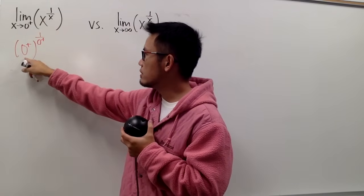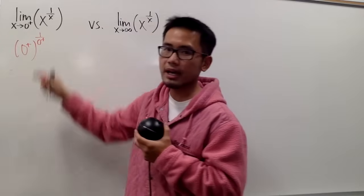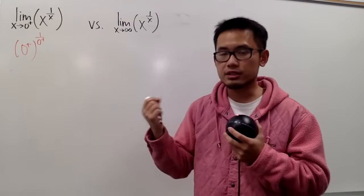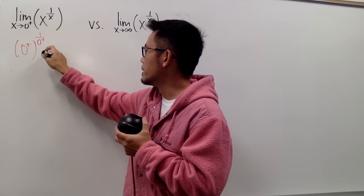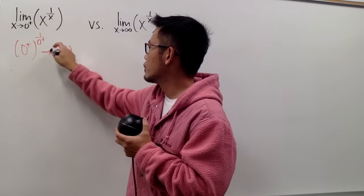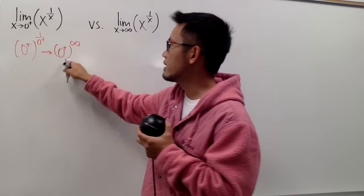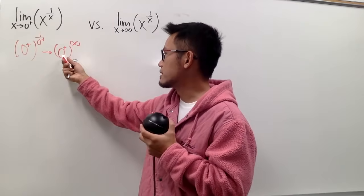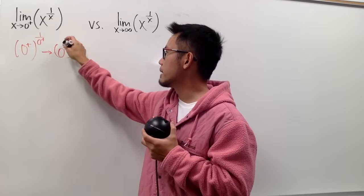Okay, this is 0, and 1 over 0 plus, because they're both positive, you can conclude that it's just pretty much infinity. So this is going to be 0 plus raised to the positive infinity power.